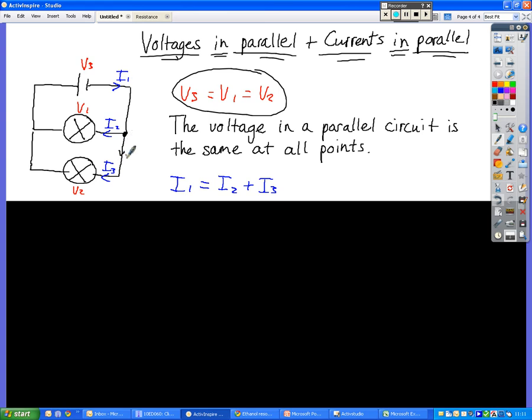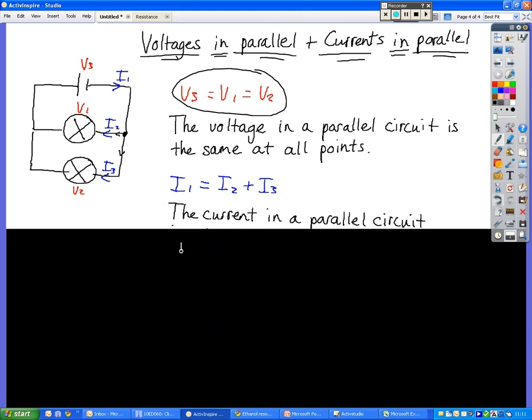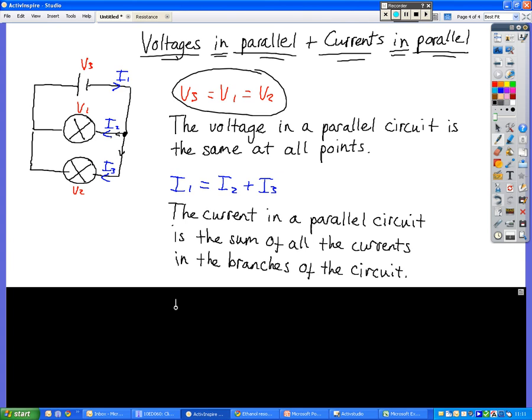So some of it will go down this way, and some of it will go this way, so that's where we have I2 and I3. And if you connect an ammeter into here, here, and here, you will find that the current that is coming out of the battery is equal to the sum of these currents in each individual branch within the parallel circuit. So I1 is equal to I2 plus I3.